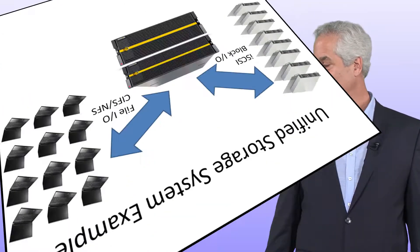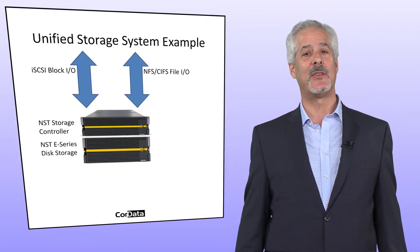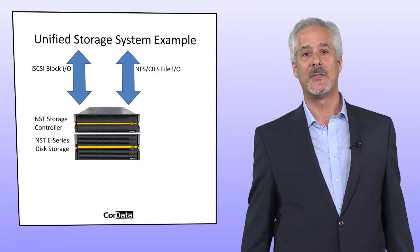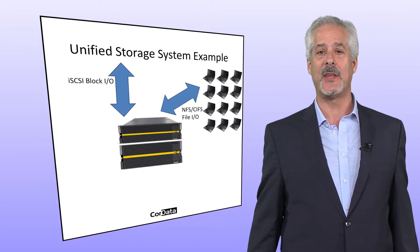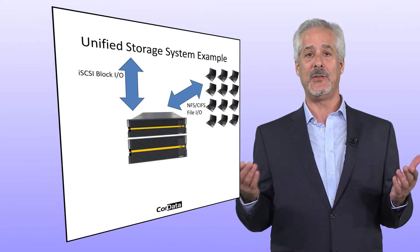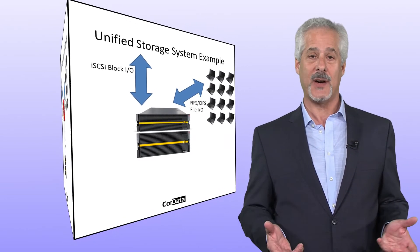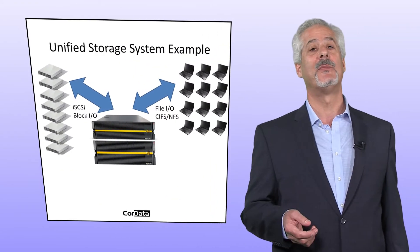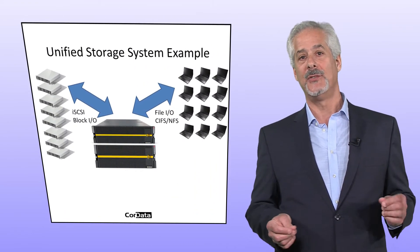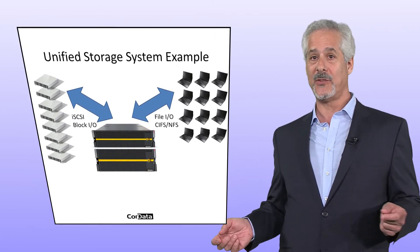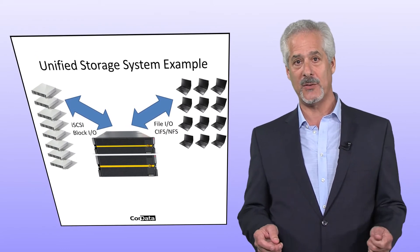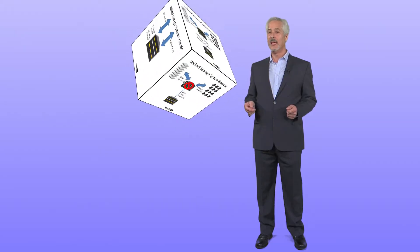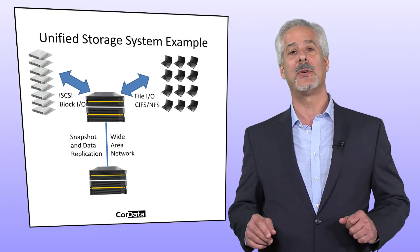Whether the distances between systems are across the hallway or across the country, here's an example of a unified storage system connected to existing SAN and NAS networks. Here's the system providing NFS and CIFS filer services to a population of desktop and laptop PC users — each user has a D drive on the system with fully protected files. Here's the same system providing SAN services to VMware, database, web, email, and backup servers. Applications run quickly since SAN provides the best performance for server-based, transactionally intensive applications.